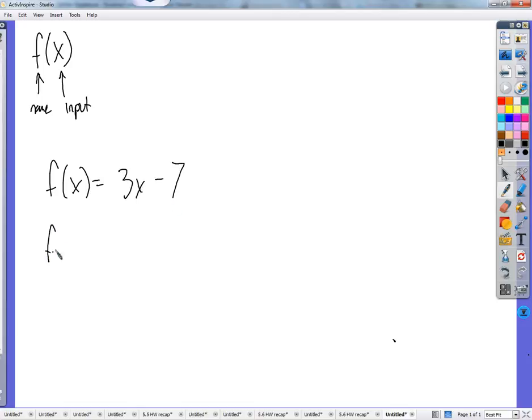So one thing that we could do is, what does that mean in function notation? Does that mean that it would end up being 5 equals 3, and then the x would be 5 minus 7? Like, when you write it out, it's like 5 equals, and then you put the 5 in for x. You put the 5 in for x.